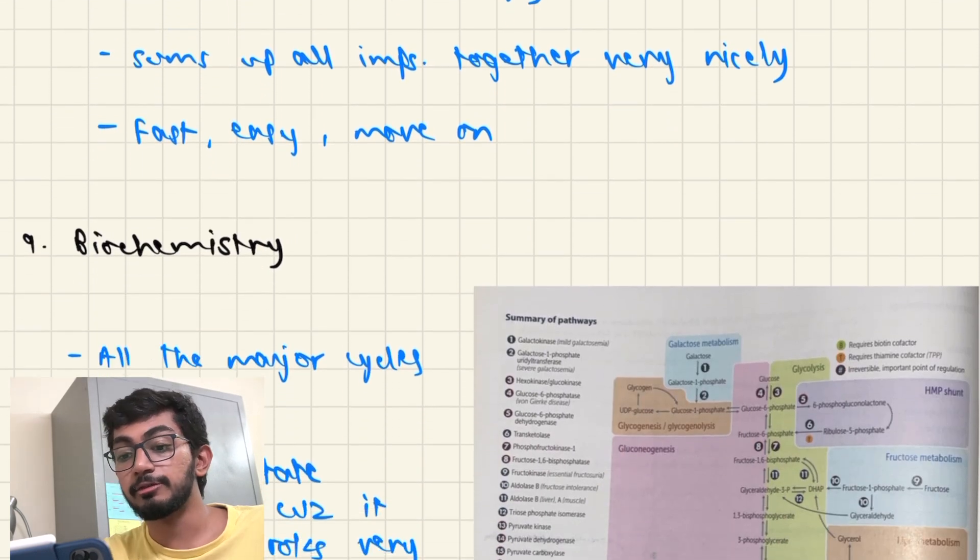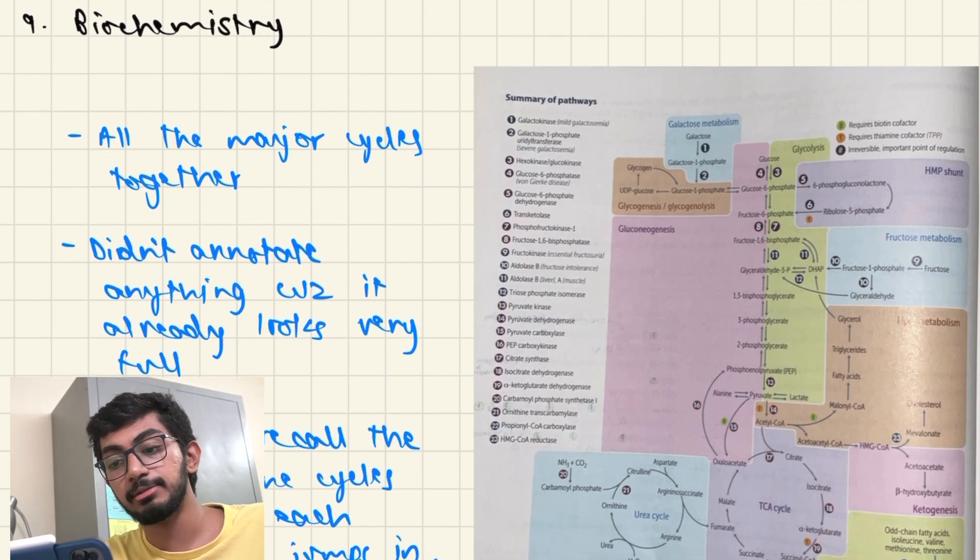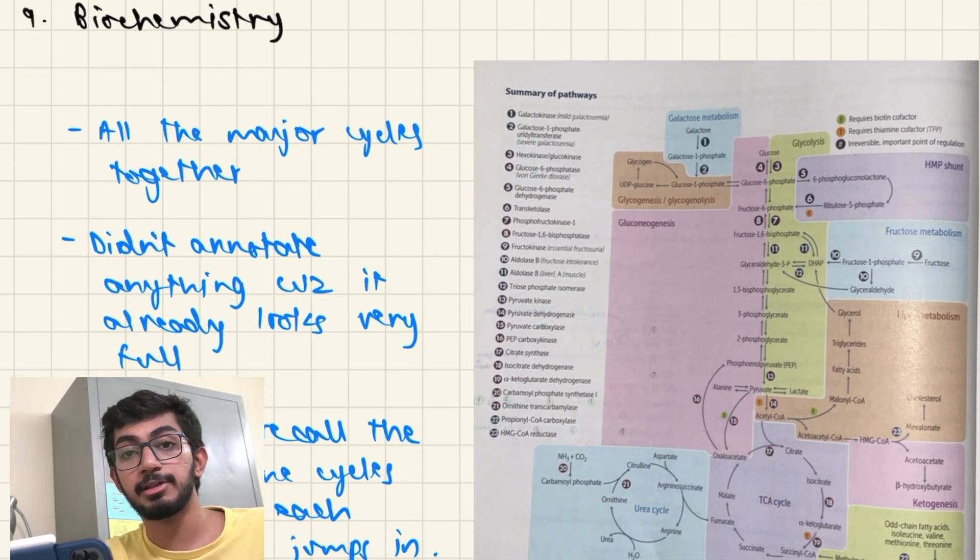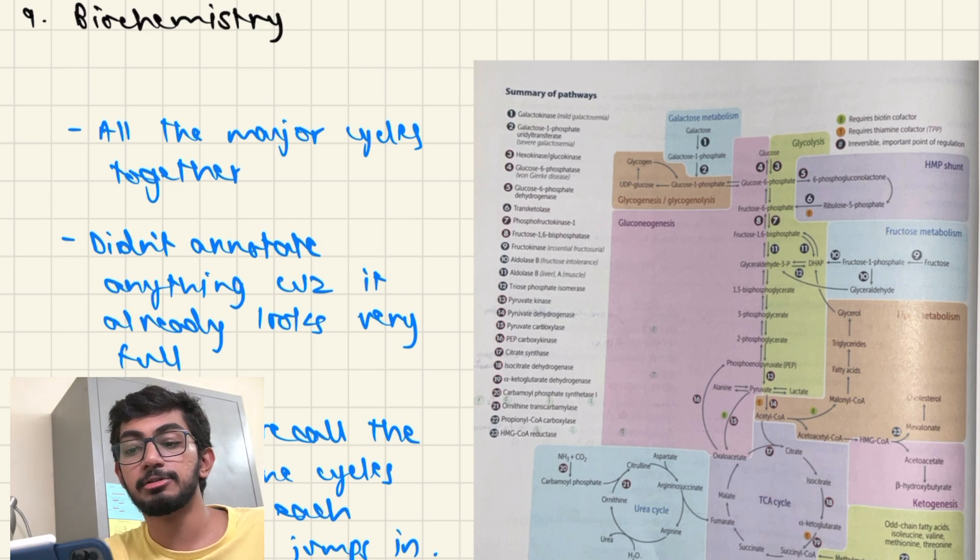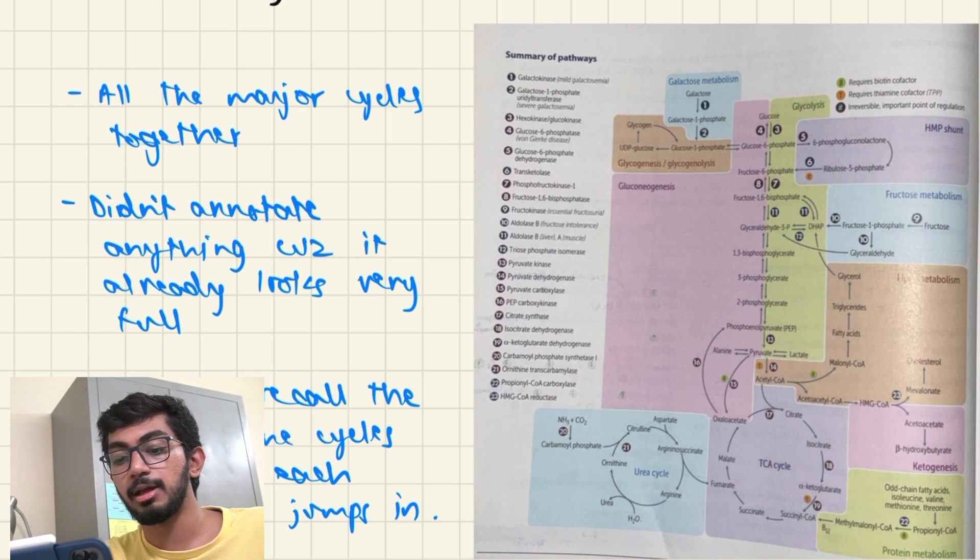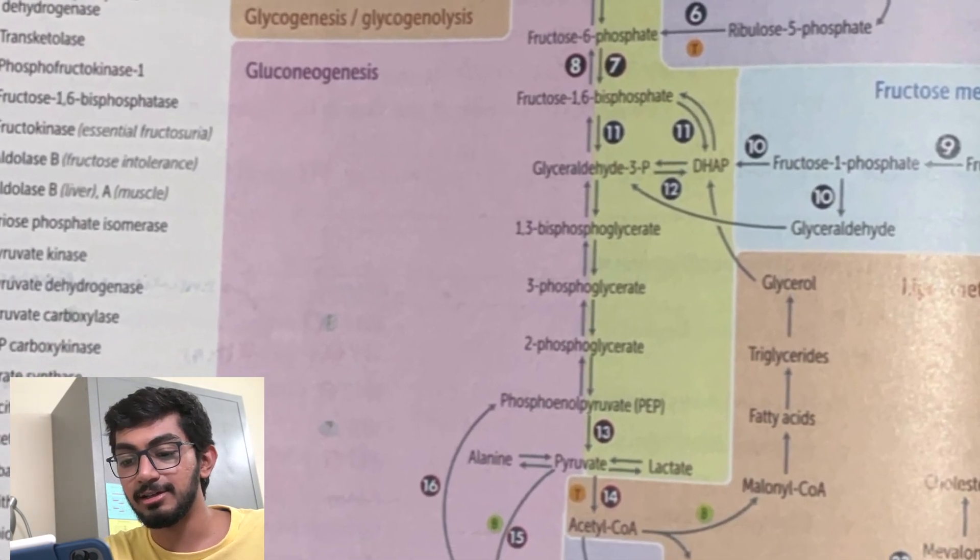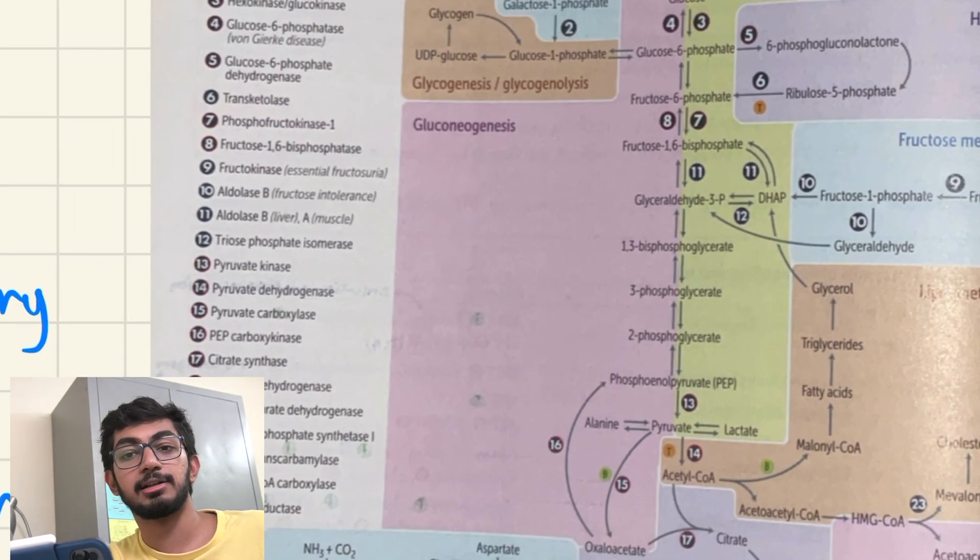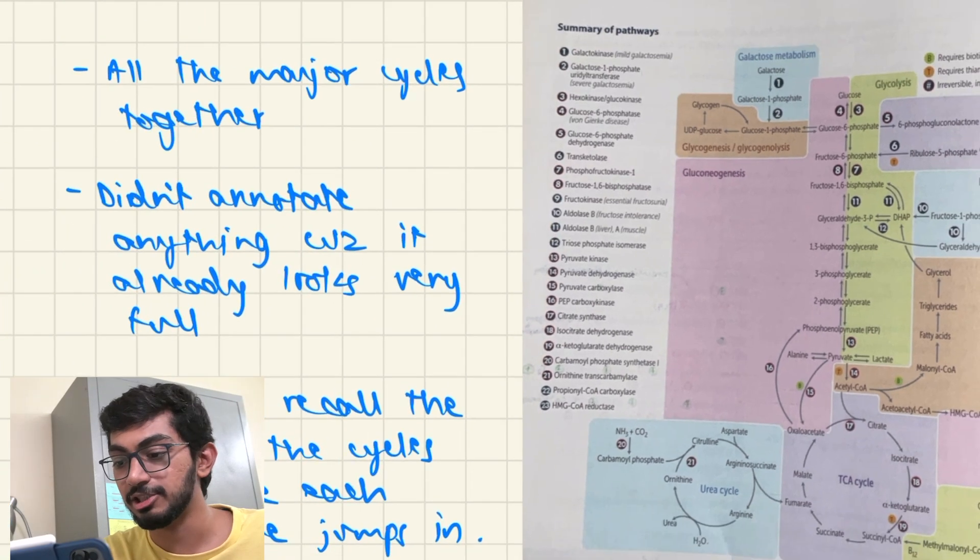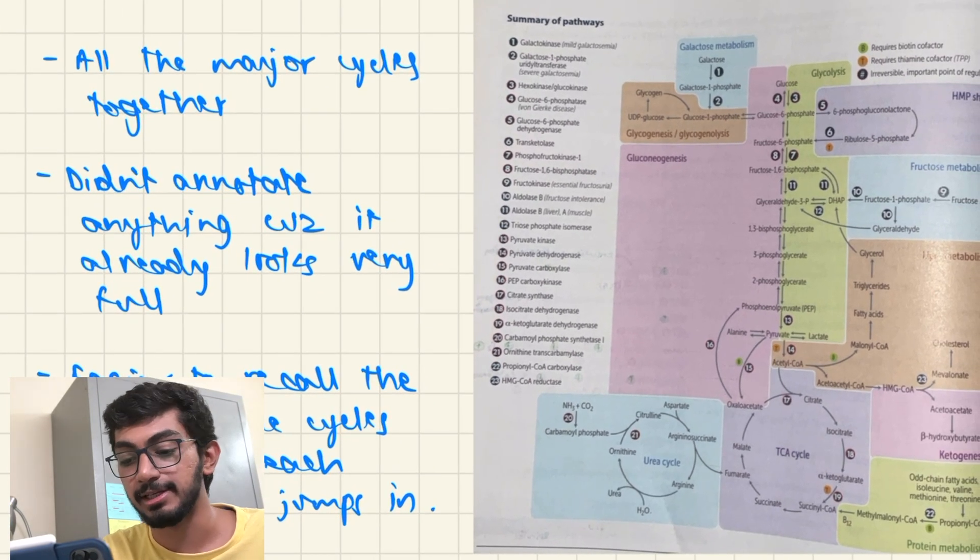And move on to Biochemistry. The First Aid has all the Biochemistry major cycles. And many of them are clubbed together so that you know which cycle enters which stage. And I didn't annotate much because it already looks like there is a lot of things that is written here. And any annotation on this would just ruin the cycles. And it's easier to recall the steps in the cycle and where each substrate jumps in and connects with the whole cycle.